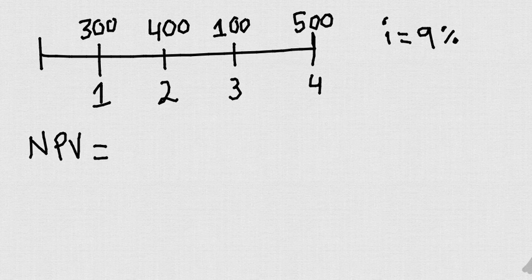So we have these cash flows: in year one, 300; year two, 400; year three, 100; year four, 500.